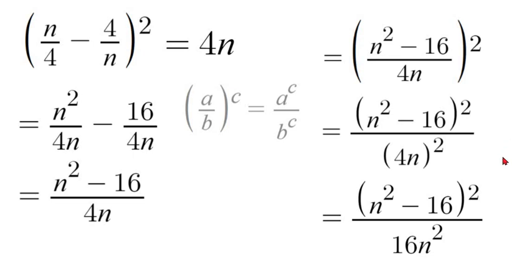So our final simplified answer would be (n² - 16)² over 16n².